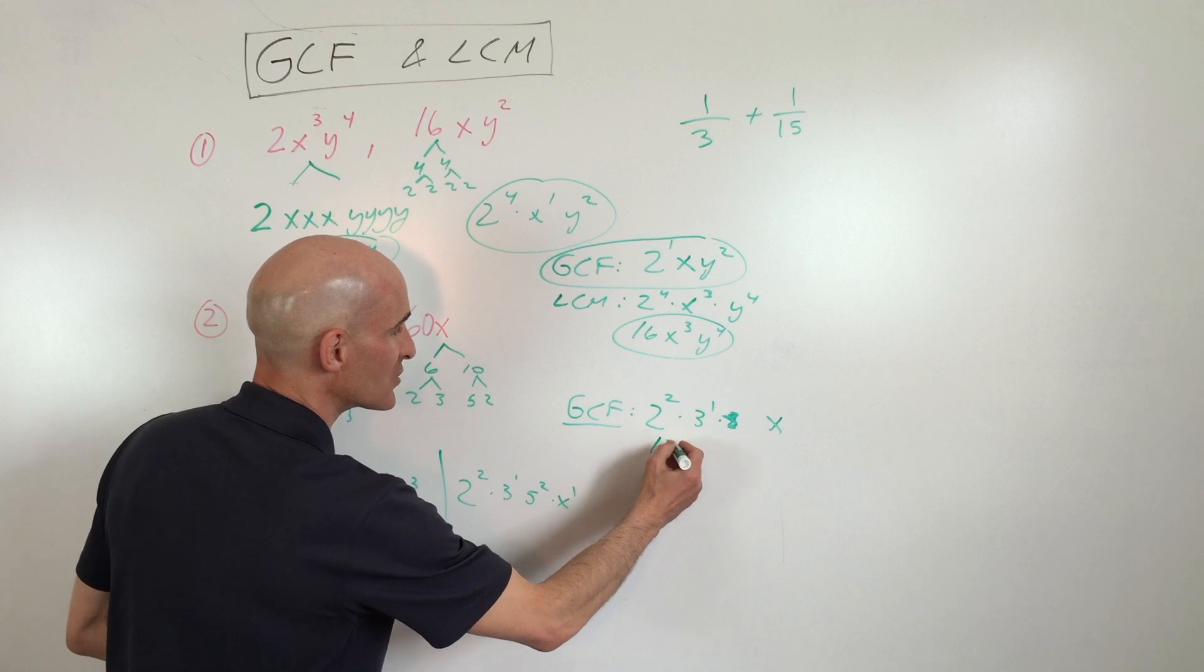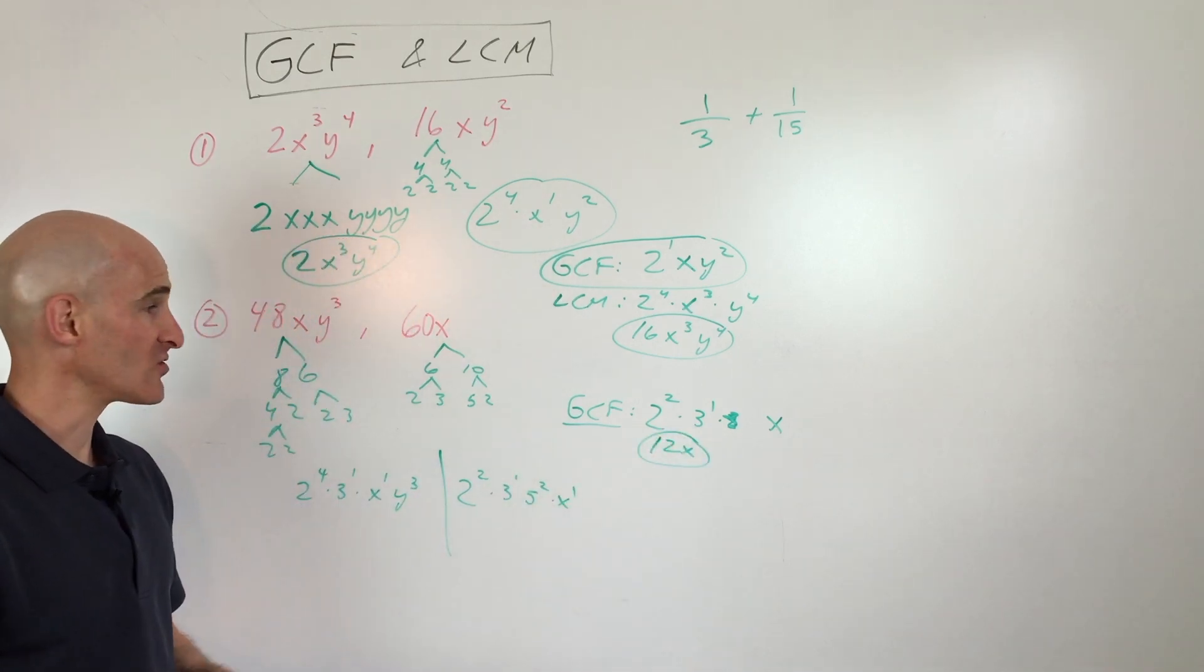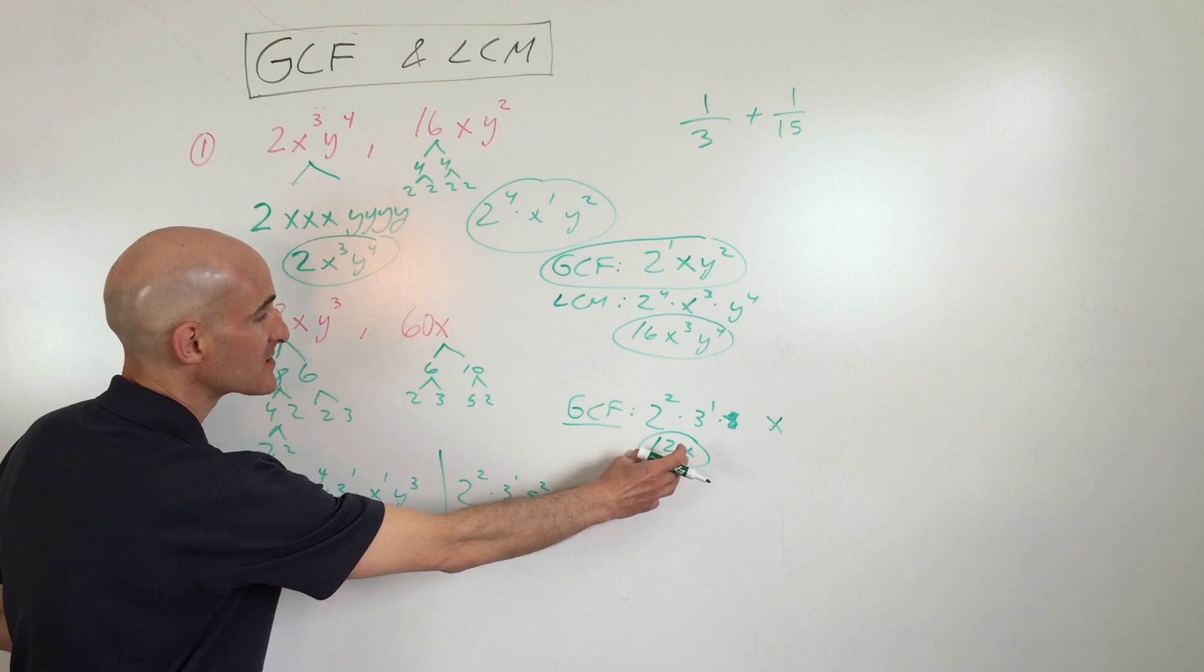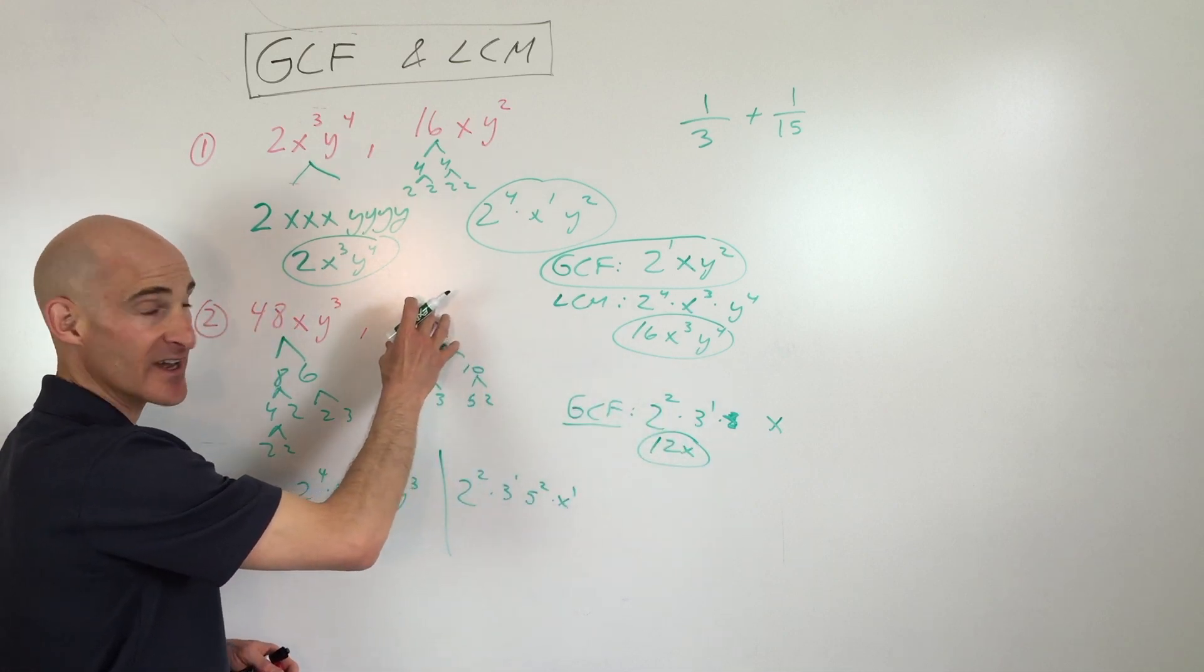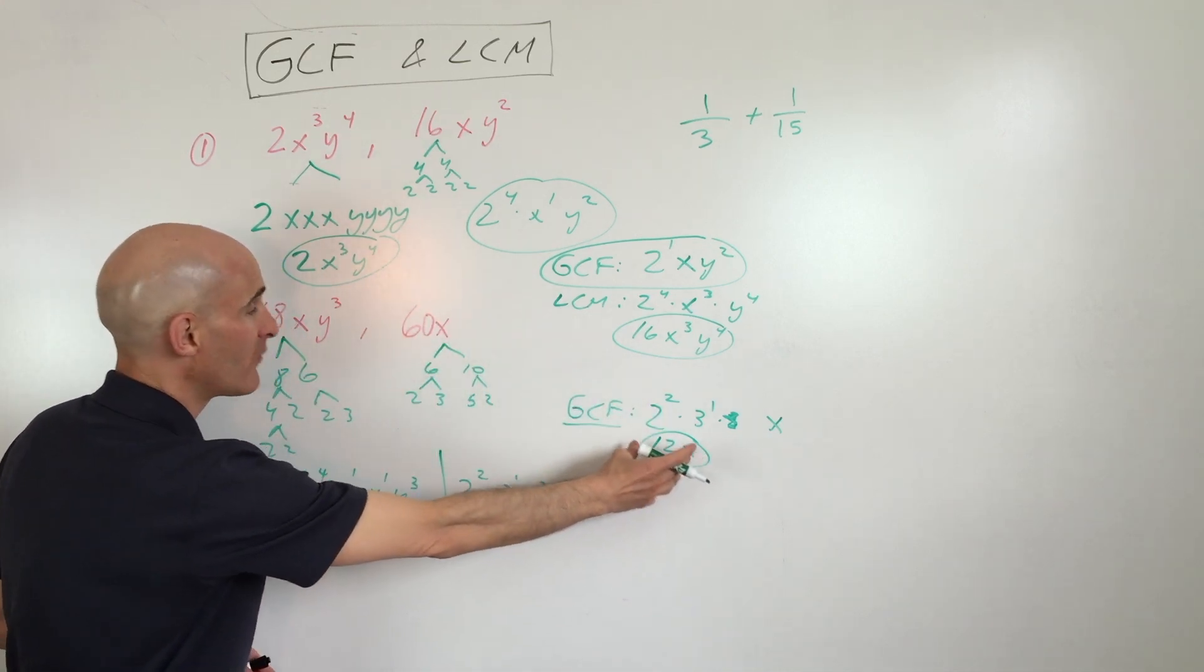So if you simplify this, you get 12x. And that's the greatest common factor. So that means that 12x is the largest thing that will divide into 60x 5 times.